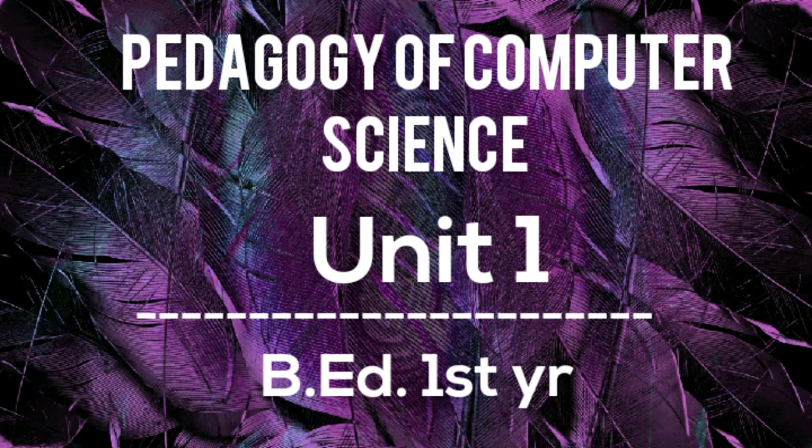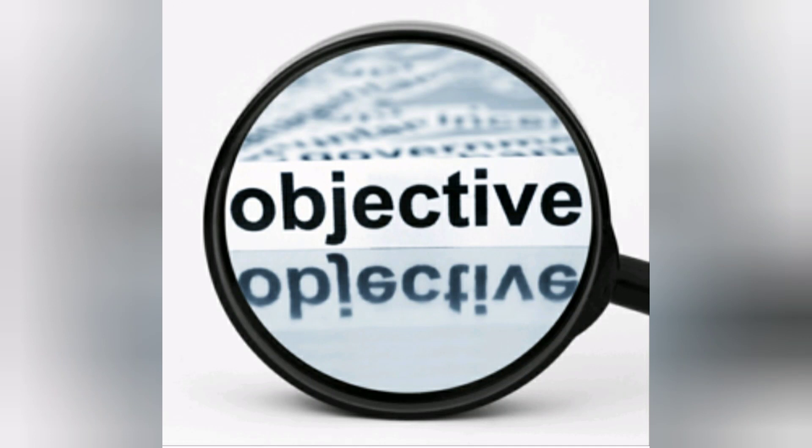Hi friends, welcome to JAWS Art. Today we are going to see Pedagogy of Computer Science Unit 1. Unit 1 is all about aims and objectives of teaching computer science. We will be going to study about aims and objectives of teaching computer science, analyze the need and significance of teaching computer science, and values of teaching computer science.